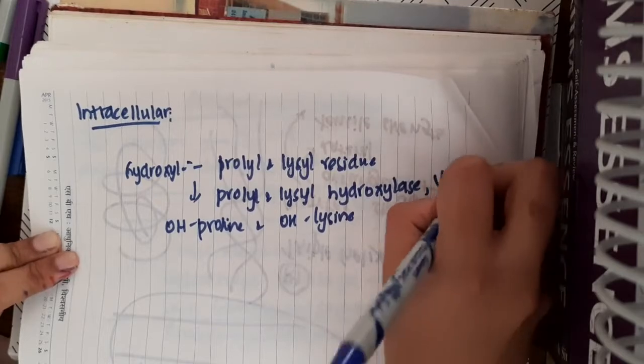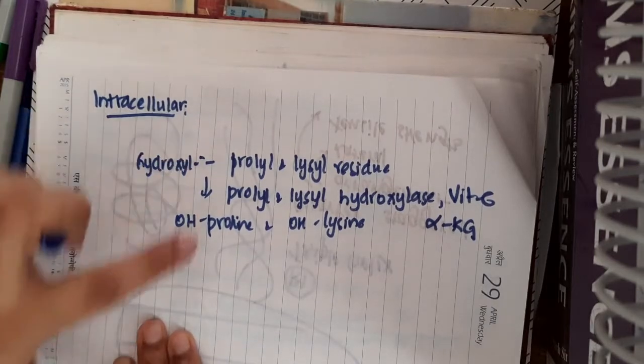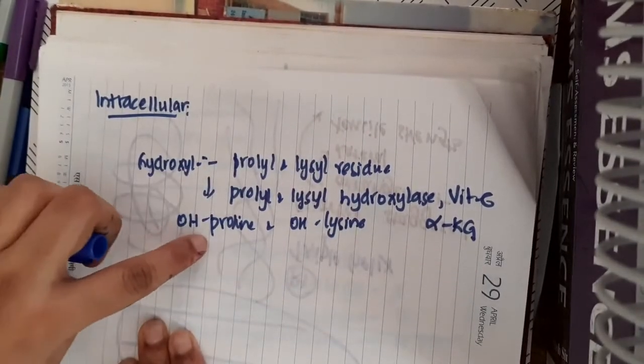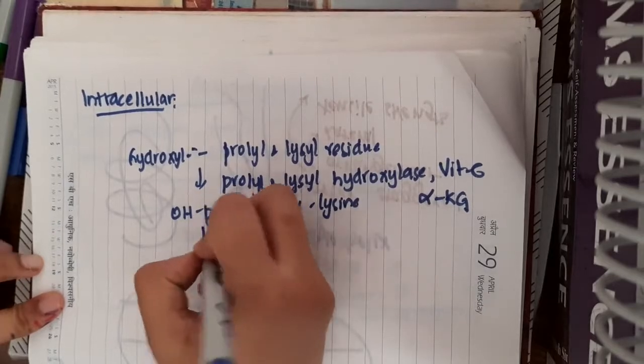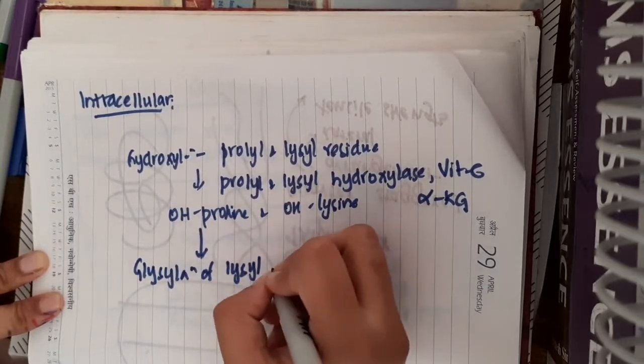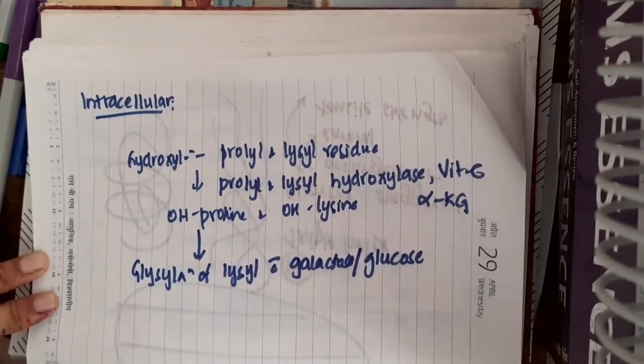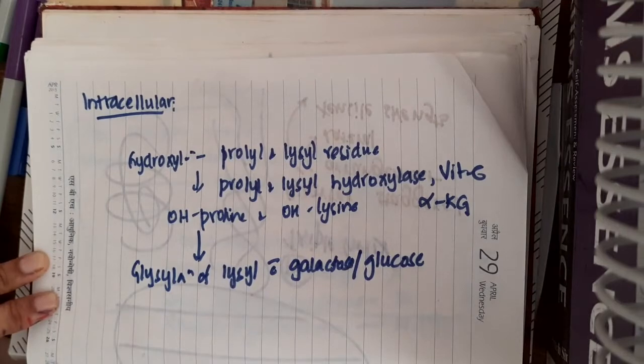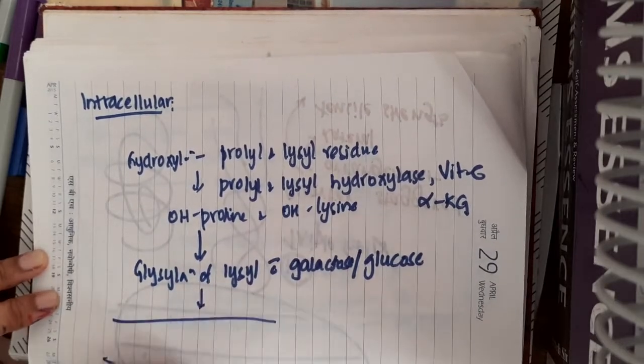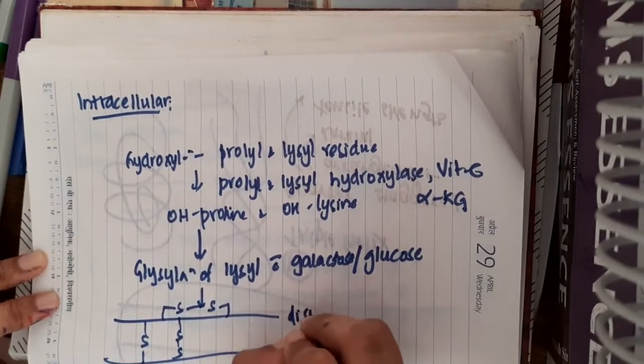For which vitamin C is the coenzyme and alpha-ketoglutarate is also involved in this reaction of proline and lysine residues getting converted to hydroxyproline and hydroxylysine. Then, you see the glycosylation of some lysine residues occurs with galactose or glucose. You see hydroxylation of these hydroxylysine residues. And then, you will see formation of intra-chain and inter-chain disulfide bonds are formed later.